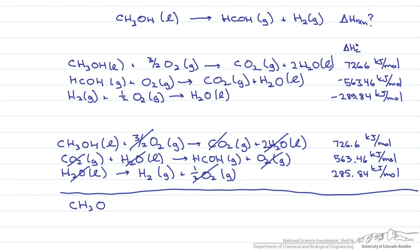So when we've canceled everything, we get our original reaction back. Methanol, liquid, goes to formaldehyde gas plus hydrogen gas. And since we've summed up the reactions, we can also sum up the heats of combustion. So the heat of reaction for methanol forming formaldehyde and hydrogen gas using the heats of combustion add up to be 1,576 kJ per mole.